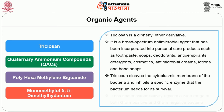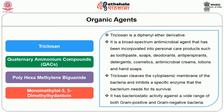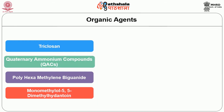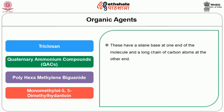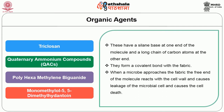Triclosan cleaves the cytoplasmic membrane of the bacteria and inhibits a specific enzyme that the bacterium needs for its survival. It has bacteriostatic activity against a wide range of both gram-positive and gram-negative bacteria. Quaternary ammonium compounds have a silane base at one end of the molecule and a long chain of carbon atoms at the other end. They form a covalent bond with the fabric. When a microbe approaches the fabric, the free end of the molecule reacts with the cell wall, causes leakage of the microbial cell and causes cell death.